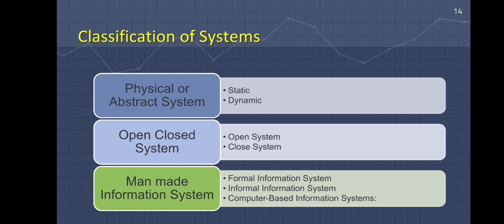Dynamic systems are always evolving. On the other hand, computer systems are dynamic systems. Programs, data, and applications can be changed to meet the demands of the user. Abstract systems are conceptual - these are not physical entities. They may be formulas, representations, or models of a real system.